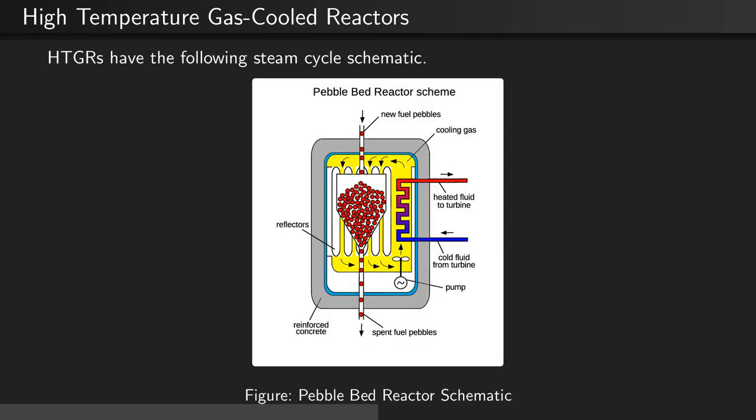Here we see a steam cycle schematic for a pebble bed reactor. Pebbles are loaded into the reactor core from the top and removed from the bottom. Noble gas coolant flows around these spheres. The steam cycle secondary coolant loop is placed in the side of the core such that it interacts with the heated gas.